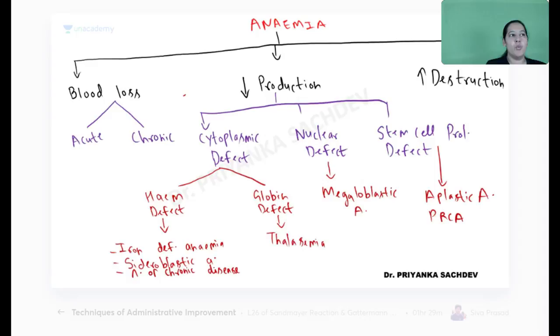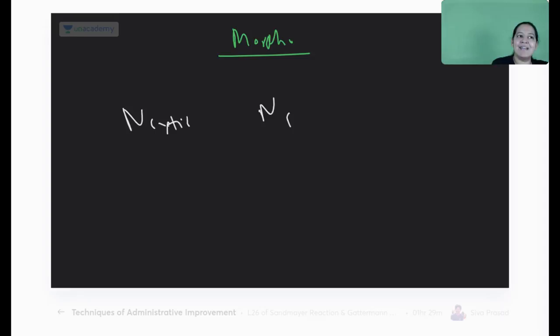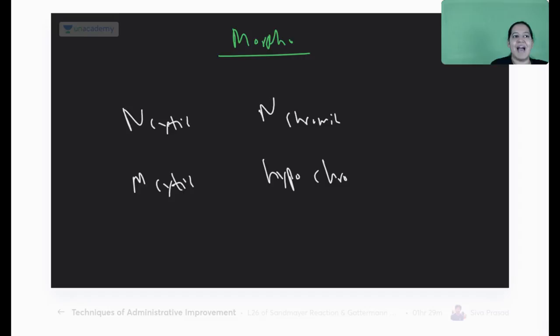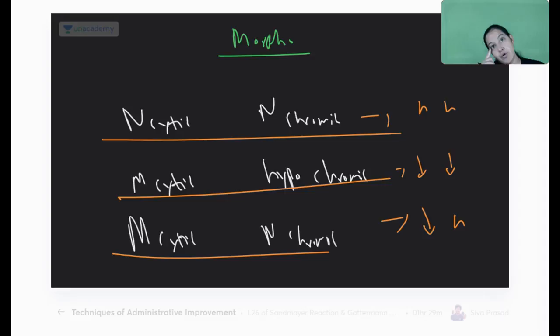In anemia, we have seen the classification. There are two types: morphological classification and etiological classification. In morphological classification, there are three types: normocytic normochromic (size and color both normal), microcytic hypochromic (size and color both less), and macrocytic normochromic (size is more but color is normal). The first term indicates size of RBC, the second indicates color — i.e., hemoglobin content.